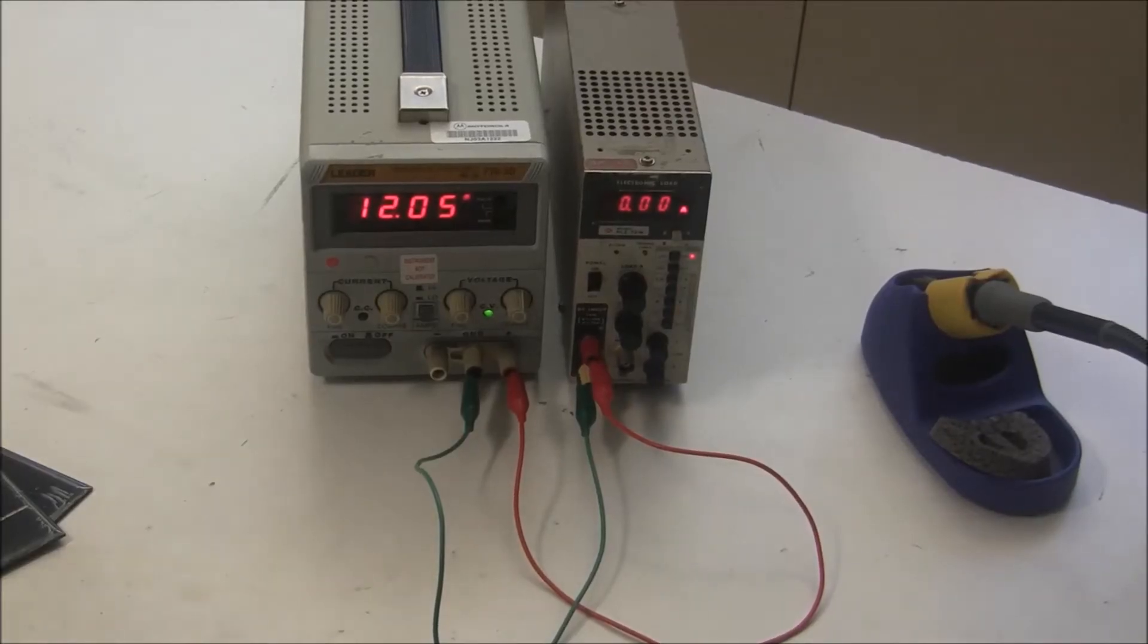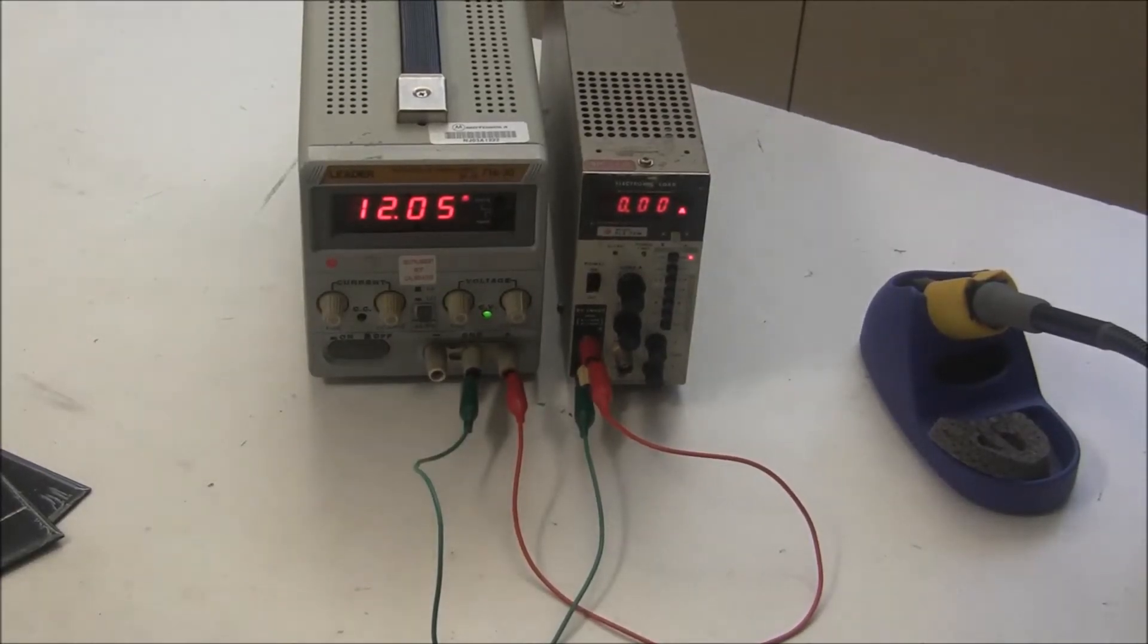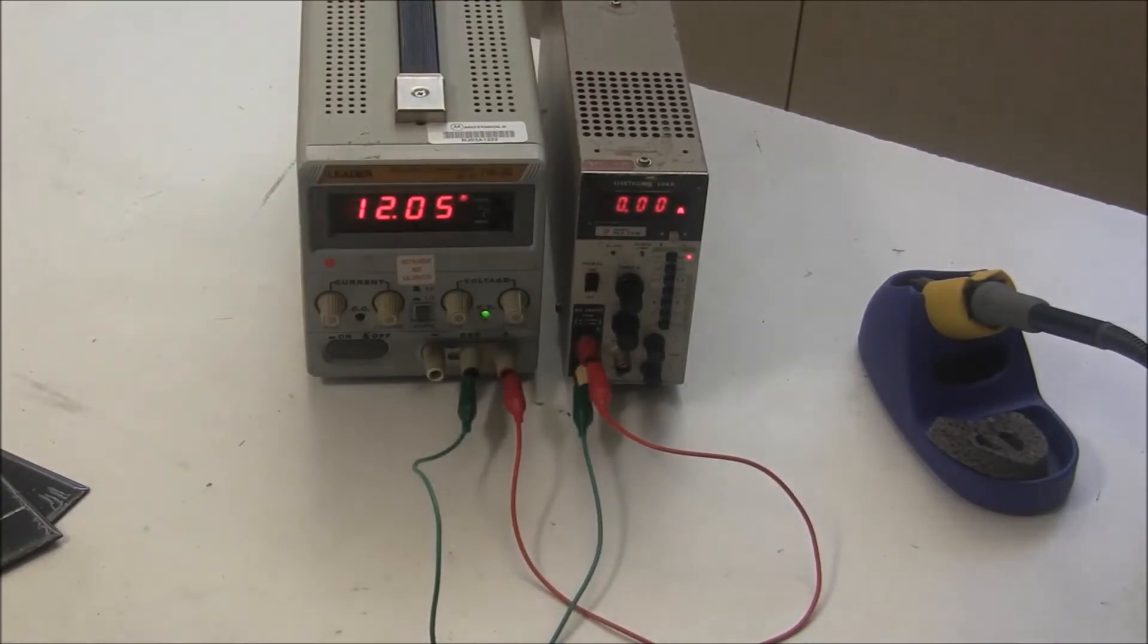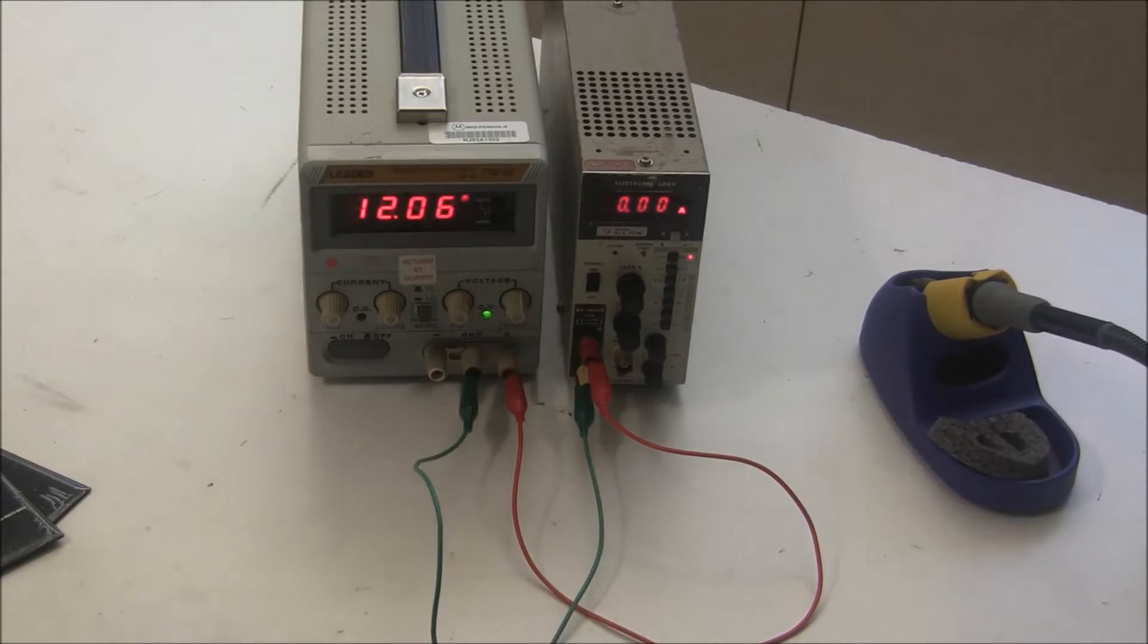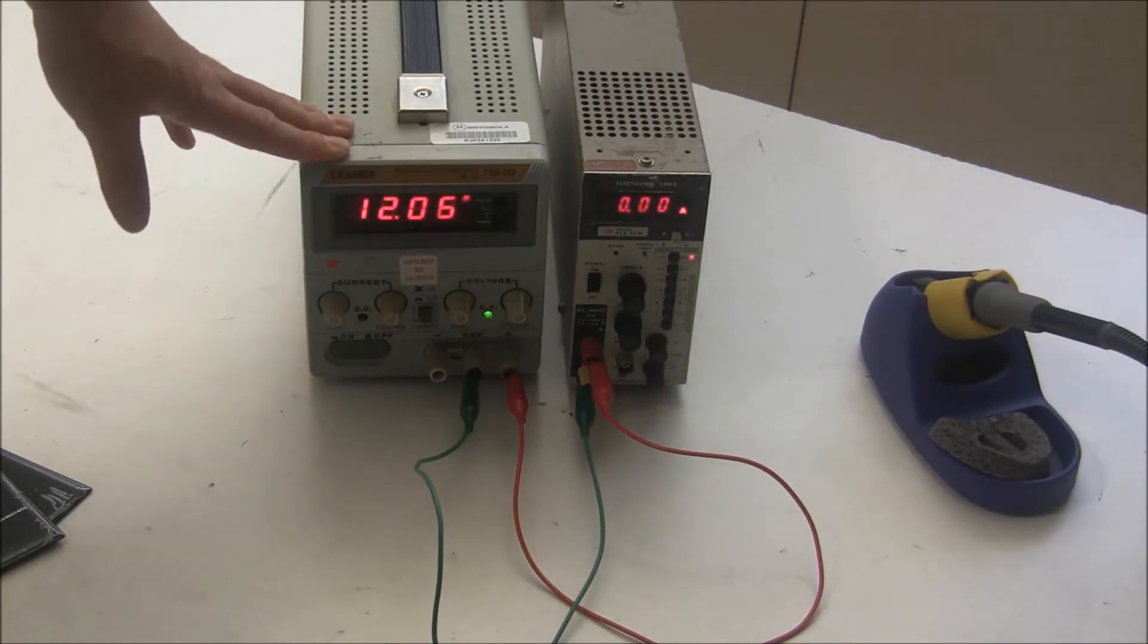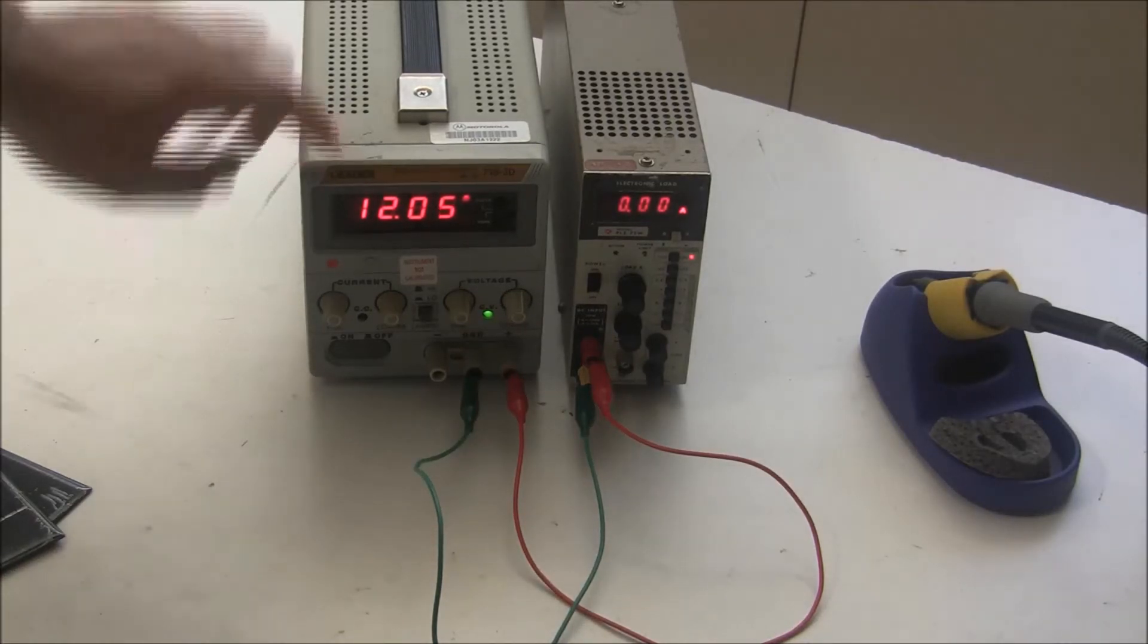Before we wire these up and go outside, I want to explain what an electronic load is. I actually mentioned it in my Profit 5 video series as a way you can load test your power supply. What I've done here is I've hooked up a benchtop adjustable power supply and I've set it to 12 volts.